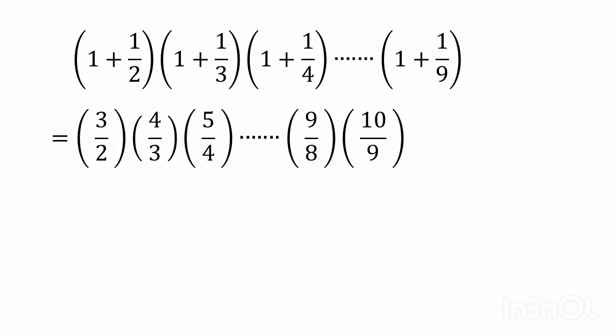Now we will cancel 3 in the second factor with this 3, similarly 4 with this 4, similarly 5 in the fourth factor and so on. Similarly 8 in the third last factor and similarly 9 will be cancelled with this 9.